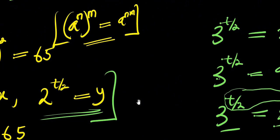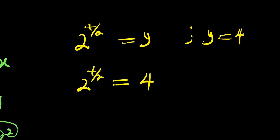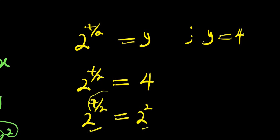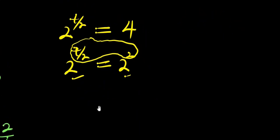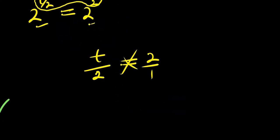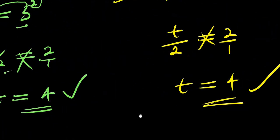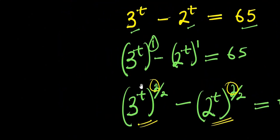We also verify using the y equation: 2^(t/2) equals y equals 4. Since 4 equals 2 squared, we have 2^(t/2) equals 2^2. Comparing exponents: t over 2 equals 2, so t equals 4. In both equations we get the same value of t.